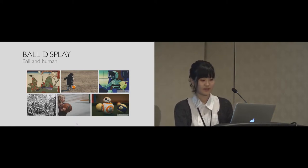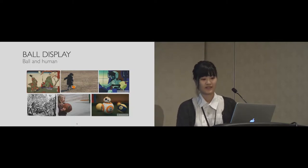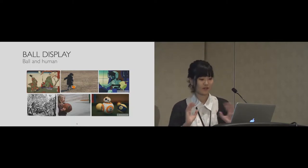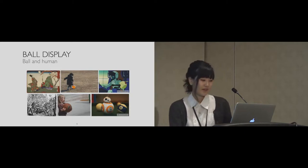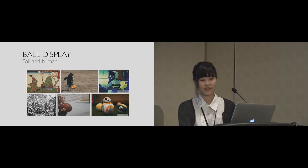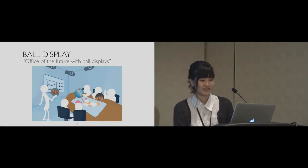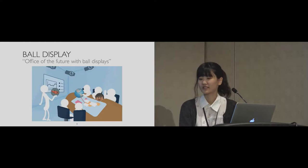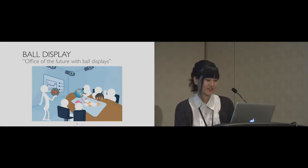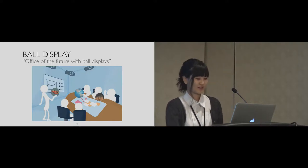Ball has interesting aspects we should utilize. The first aspect is that the ball has various ways for interaction with humans, such as handling, touching, rotating, throwing, and so on. The second aspect is a high endurance tool that can be thrown, kicked, or hit without being broken. We extend these characteristics of the ball with various interactive display technologies. This image on this slide is the office of the future with ball displays. This is what we think the ball display will be like.